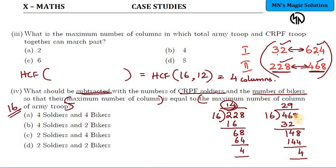Same way here, in 468, what is the remainder? 4. So when 4 is subtracted from 468, that number 464 will be exactly divisible by 16. So in the set of soldiers, 29 rows you can organize them in 16 columns exactly. Correct?